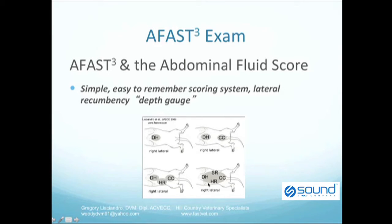Finally, in the bottom right corner, this is a dog with a maximum score. If he was hit by a car, it would be a belly full of blood, so to speak, with a score of 4. With the fluid scoring system, dogs with scores of 1 and 2 are considered small bleeders, and dogs with 3 and 4 are considered big bleeders.